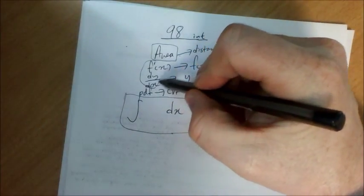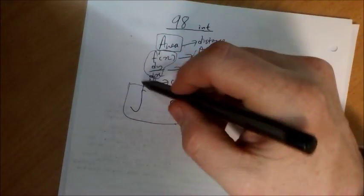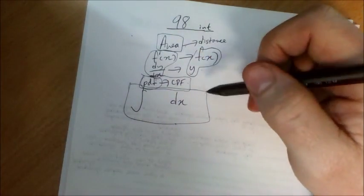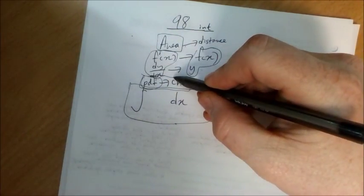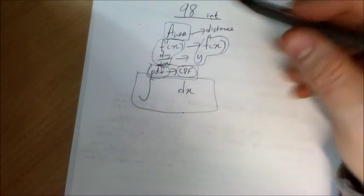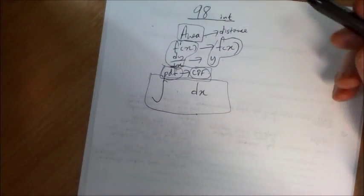If you're given a derivative and your job is to find the original rule, that will require you to integrate. For U13s doing stats, if you get given a probability density function and your job is to come up with a cumulative distribution function, then you'll have to integrate. And finally, if you see the classic symbol here, then it means you have to integrate.